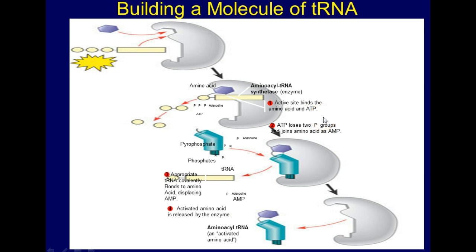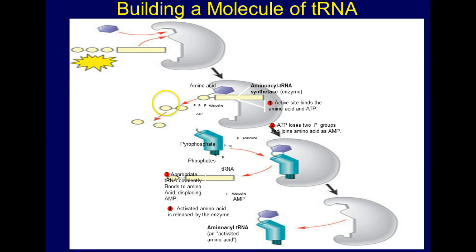In step two, ATP loses two of its three phosphates — remember it's adenosine triphosphate — so the tri becomes mono, forming AMP, adenosine monophosphate, which joins to the amino acid. Then in step three, tRNA bonds to the actual amino acid, displacing the AMP. Finally in step four, the activated amino acid is released by the enzyme. So that's how a tRNA is built.